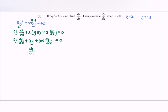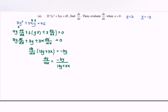So dy/dx is equal to negative 3y over 10y plus 3x.